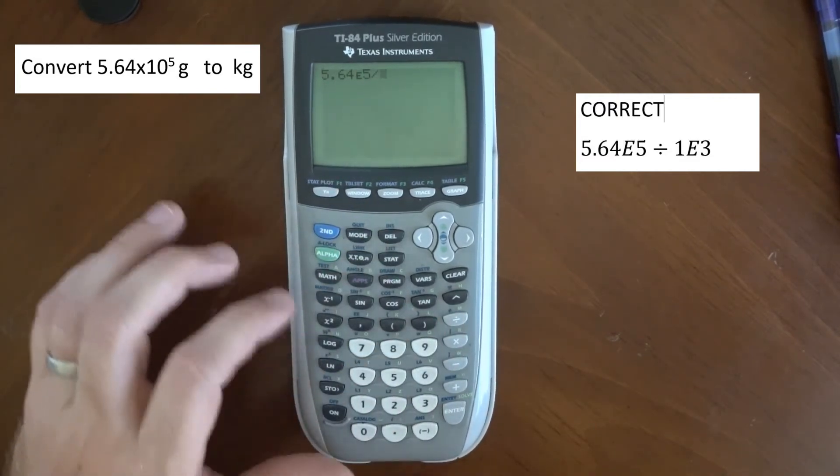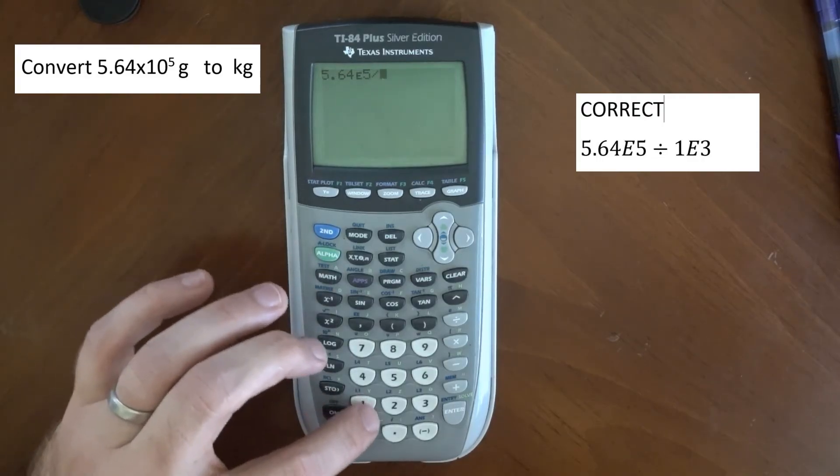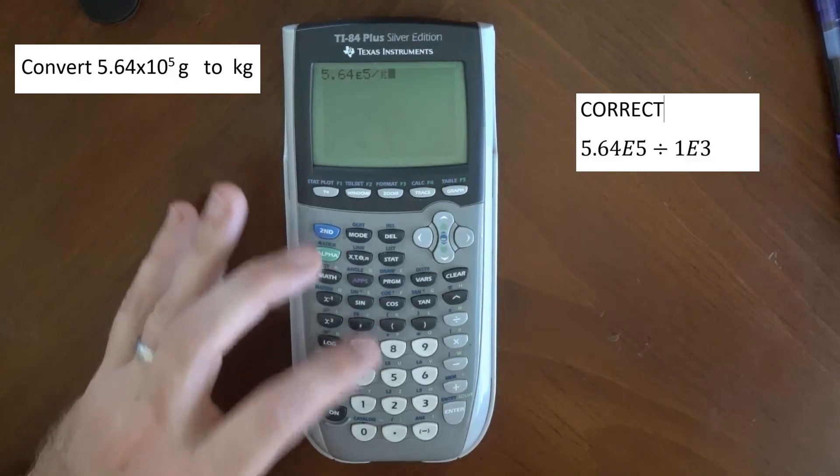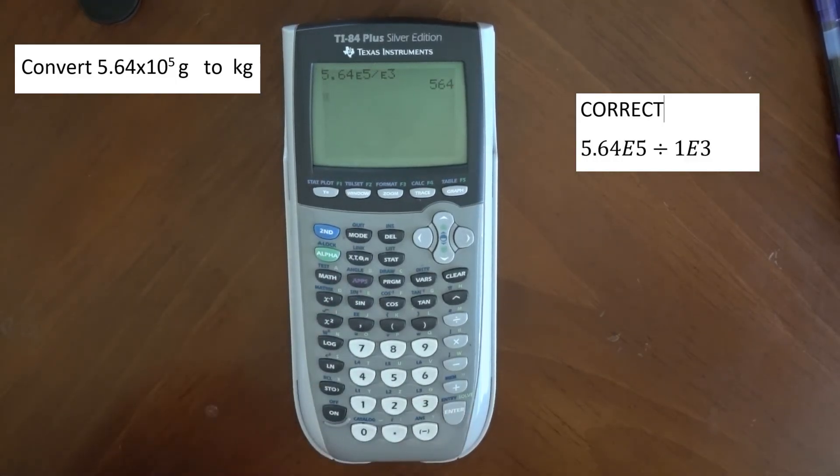I'm going to divide that by—I can put just 1 EE, or if I want, I can just put in 2nd EE 3, and I get 564.